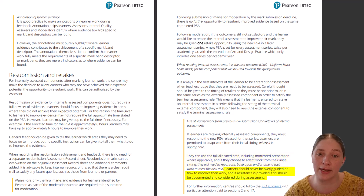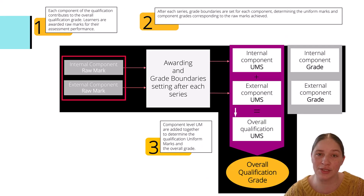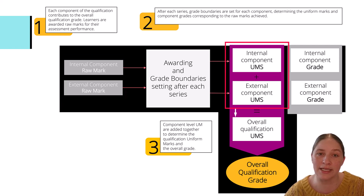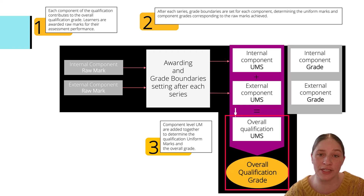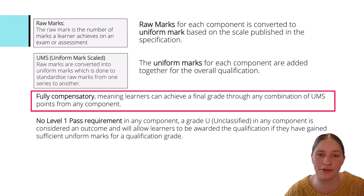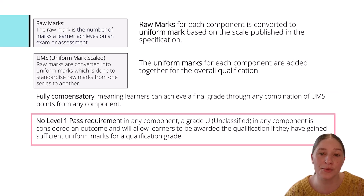Learners should never be overly guided on how to improve their work, and if assistance is provided, this should be documented and considered during assessment. The marks awarded for each component are converted to uniform mark scores, or UMS, to maintain fairness and comparability from one series to the next. The final qualification grade for each learner is determined by adding together the UMS achieved for each component. This makes the qualification fully compensatory, meaning learners can achieve their final grade through any combination of the UMS from any component.